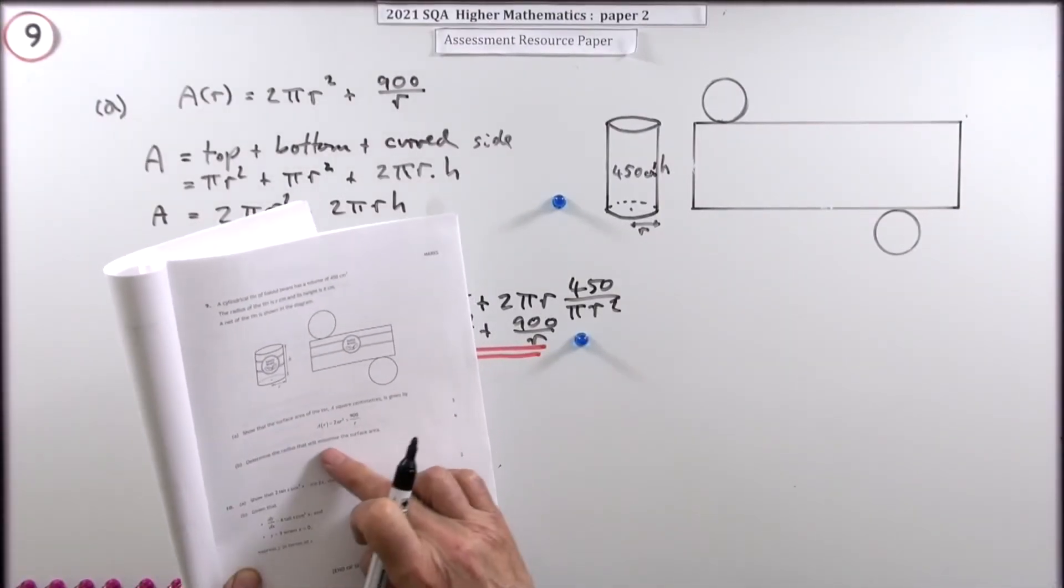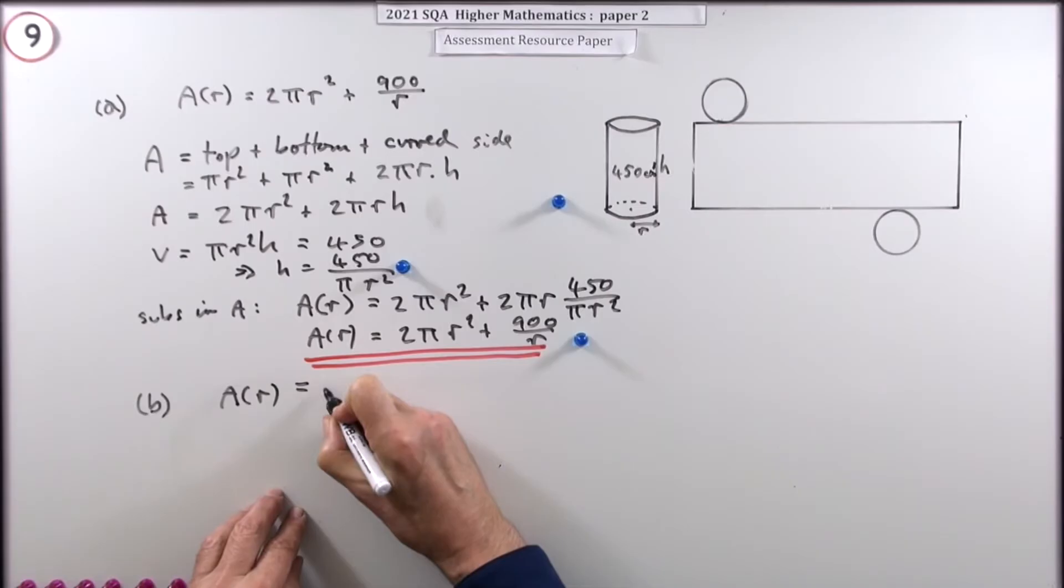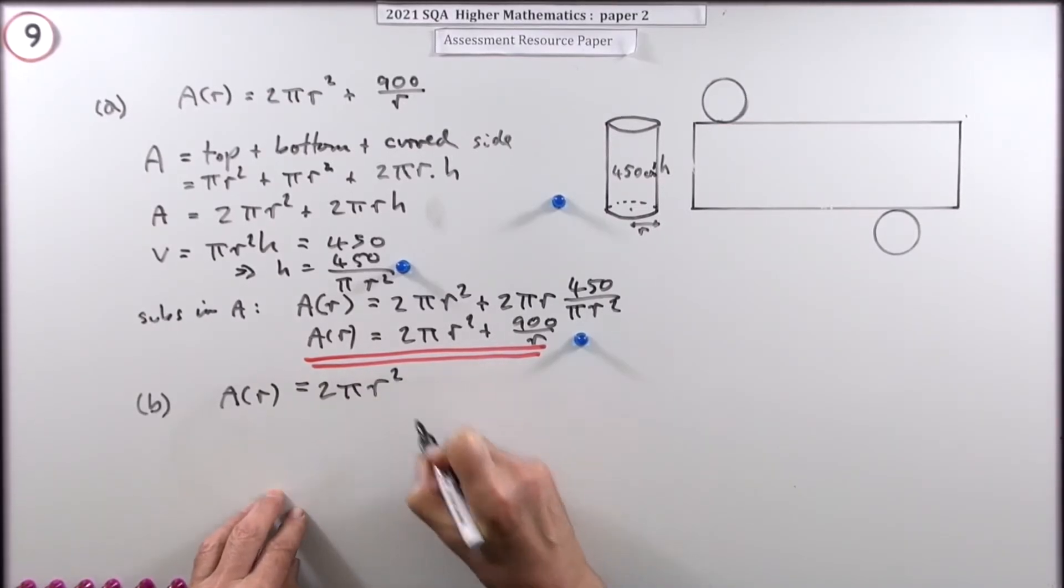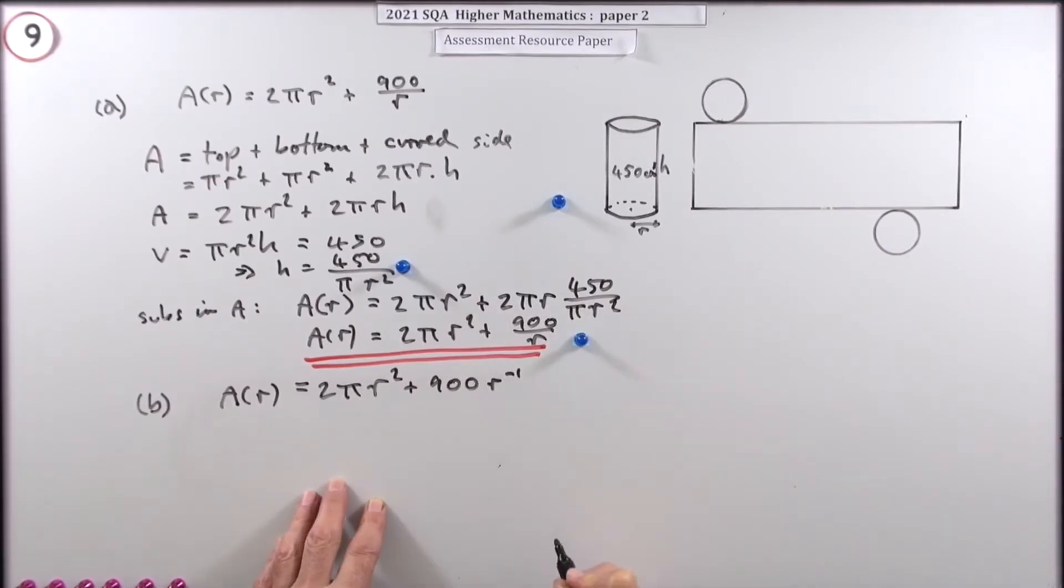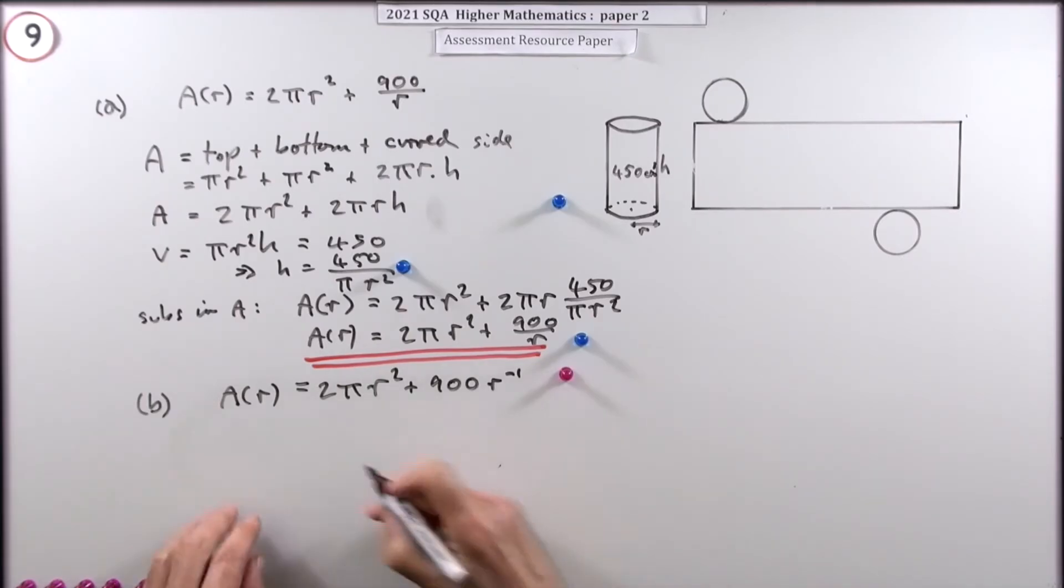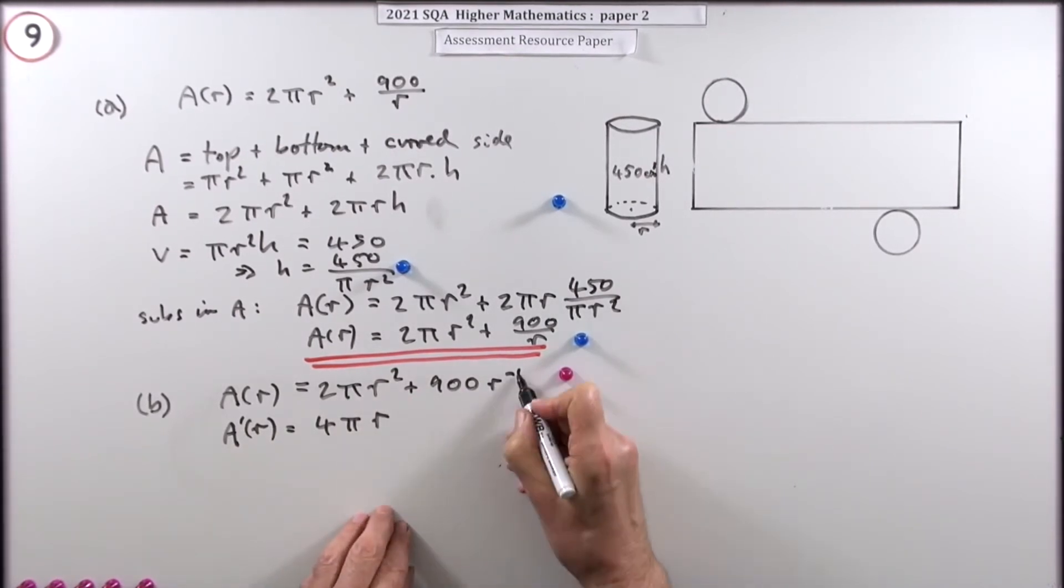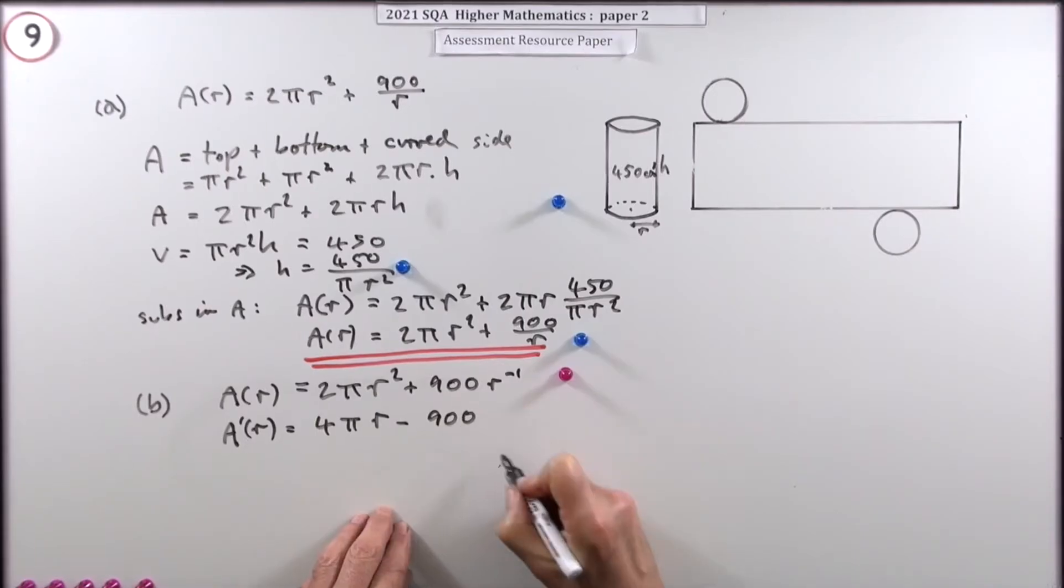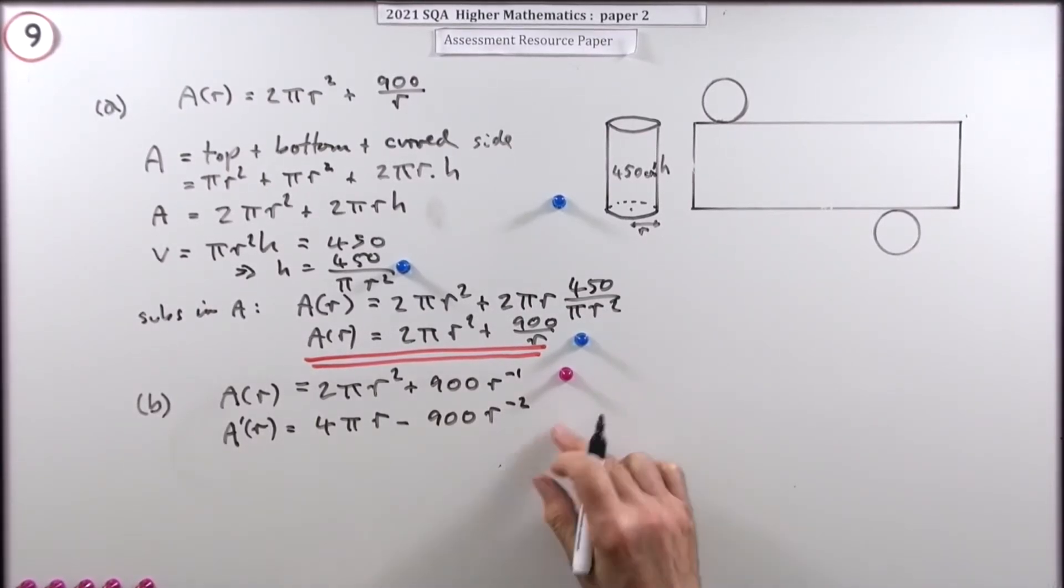And then part b, determine the radius that will minimize the surface area, so I want to differentiate it. So I'll just rewrite this in a form suitable for differentiation, that term's fine, but I'll put that r up on top, so 900 r to the negative 1, and in fact doing that, that's worth a mark, getting it into suitable form. Now I'm going to differentiate it, multiply by the power, that's 4, take 1 off the power, that's r, multiply by the power, that's minus 1 times it, take 1 off the power, negative 2. That's worth a mark.